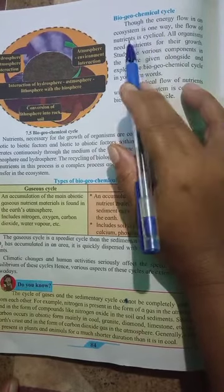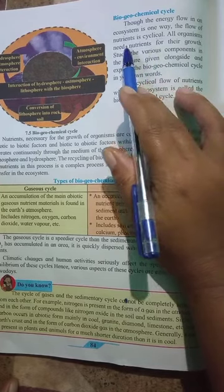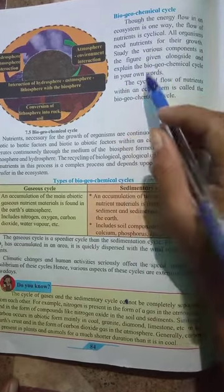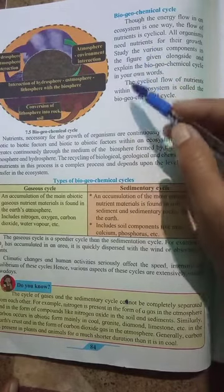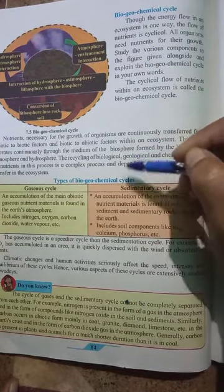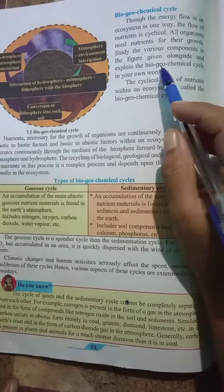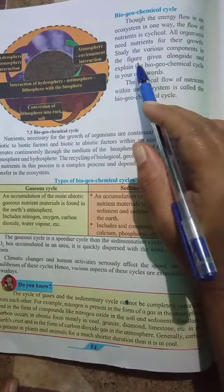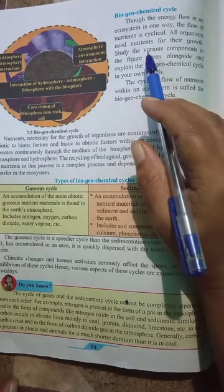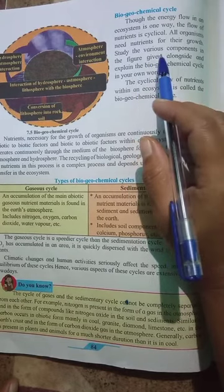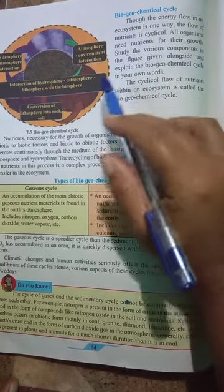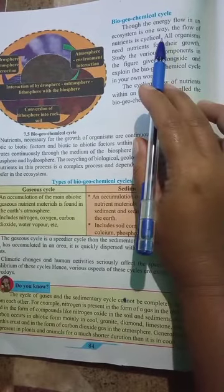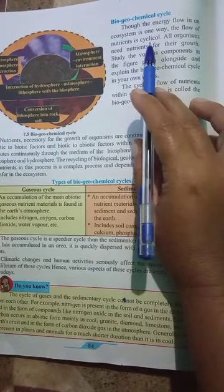The flow of nutrients is cyclical. Energy and nutrients pass from one level to another level until the decomposers, and again the nutrients decomposed by the decomposers are given back to the plants, and that cycle continues. That is why it is said that nutrient flow is cyclical.